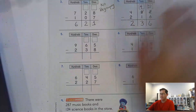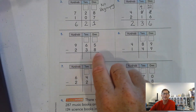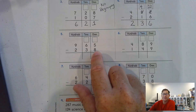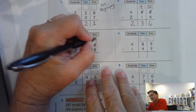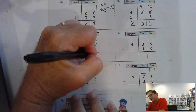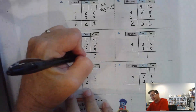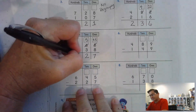Number 5: 965 minus 238. I have 5 ones, and I have to take away 8 ones — can't do that, 8 is more than 5. So I'm going to take 1 of the 6 tens and trade it for 10 ones. Now we have 15 ones. 15 take away 8 is 7. 5 tens take away 3 tens — that's 2 tens. 9 hundreds minus 2 hundreds — that's 700.